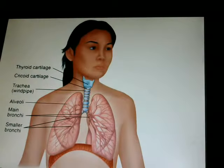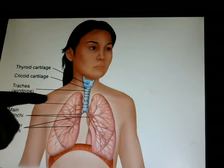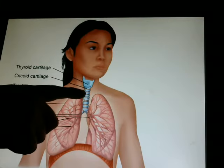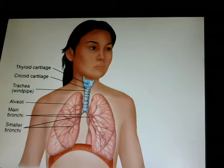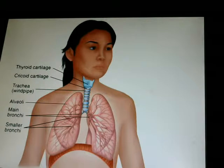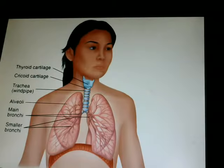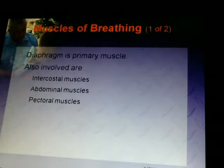That is a picture of your trachea. As you can see, these are the little ridges and rings that if you feel your throat, you can actually feel them. You have your thyroid cartilage and your cricoid cartilage, and we'll talk more about those as we get to them.